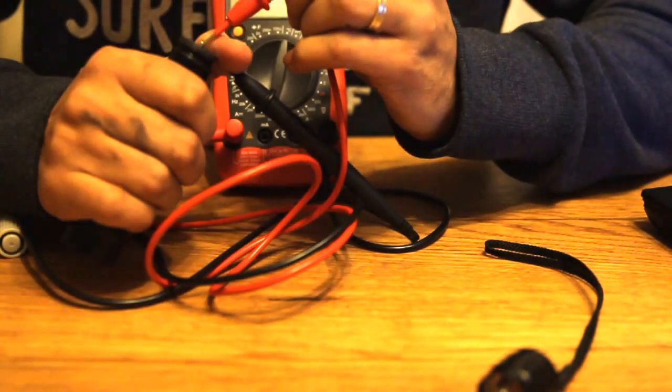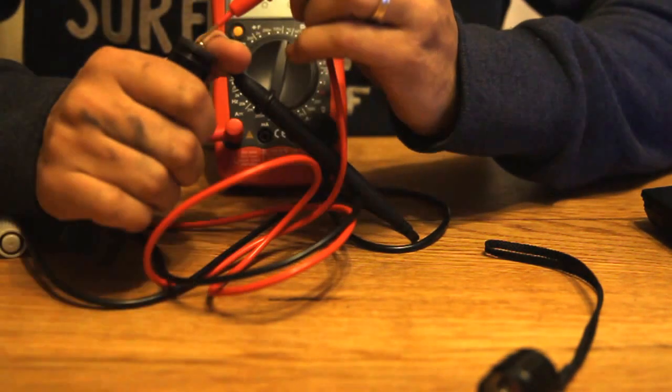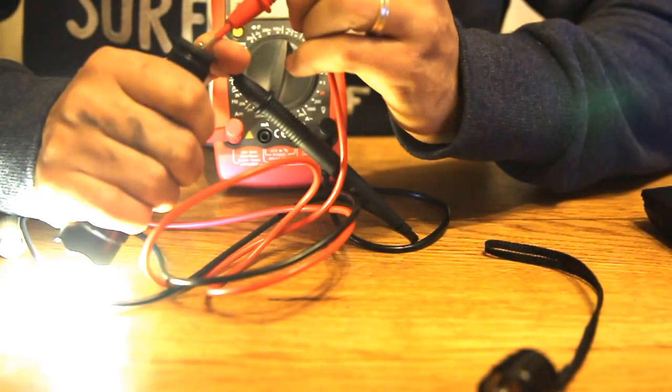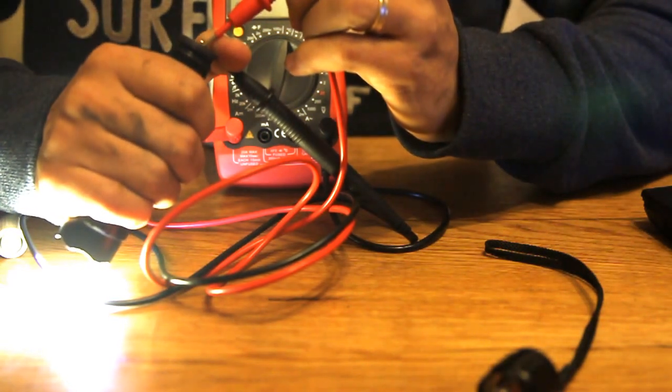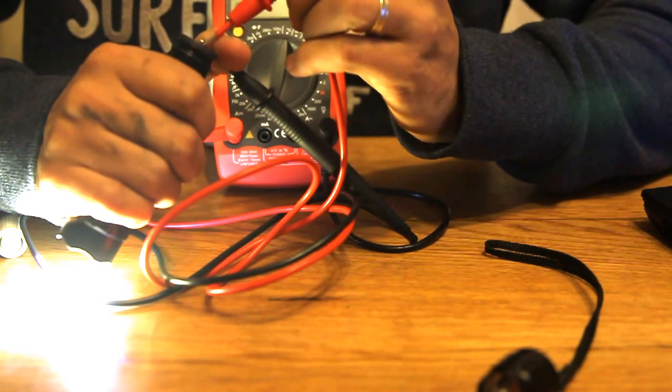So I can roughly work out that I'm getting full power on this light. I'm getting something in the region of about 500 lumen for this XML T6.